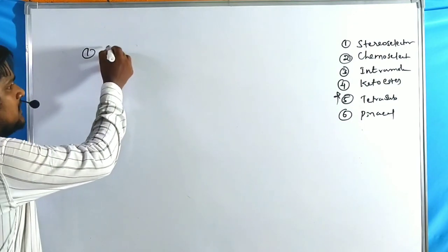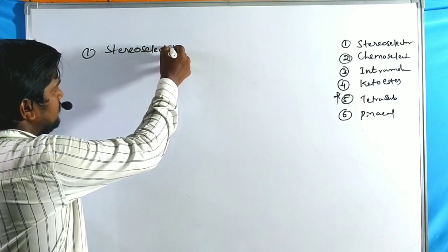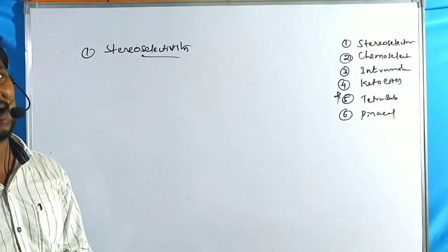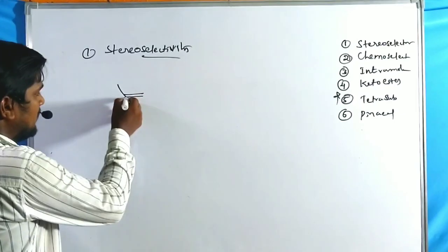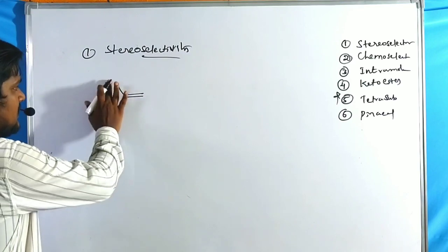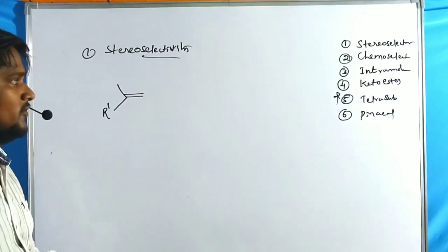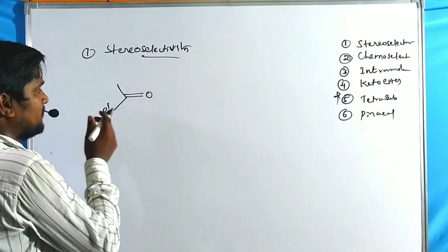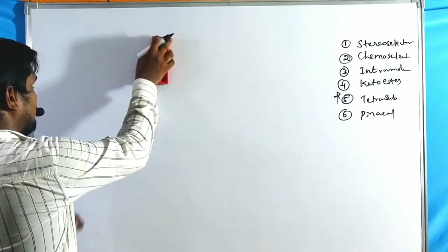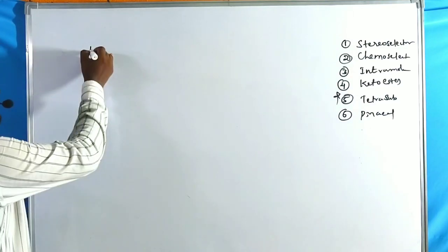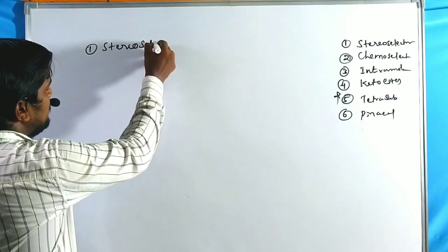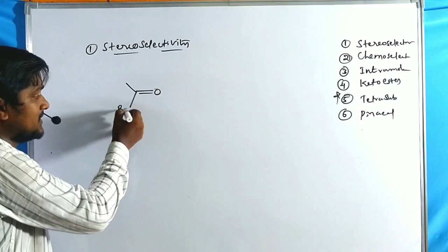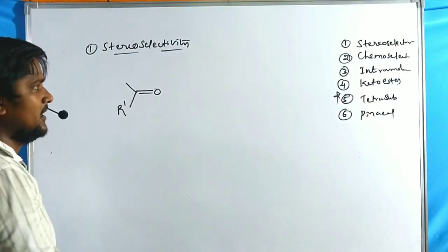The first feature is stereoselectivity, which depends on steric crowding demand. In case of unsymmetrical carbonyl compounds treated with titanium zero catalyst, two types of isomers — E and Z — are formed. This is called stereoselectivity.